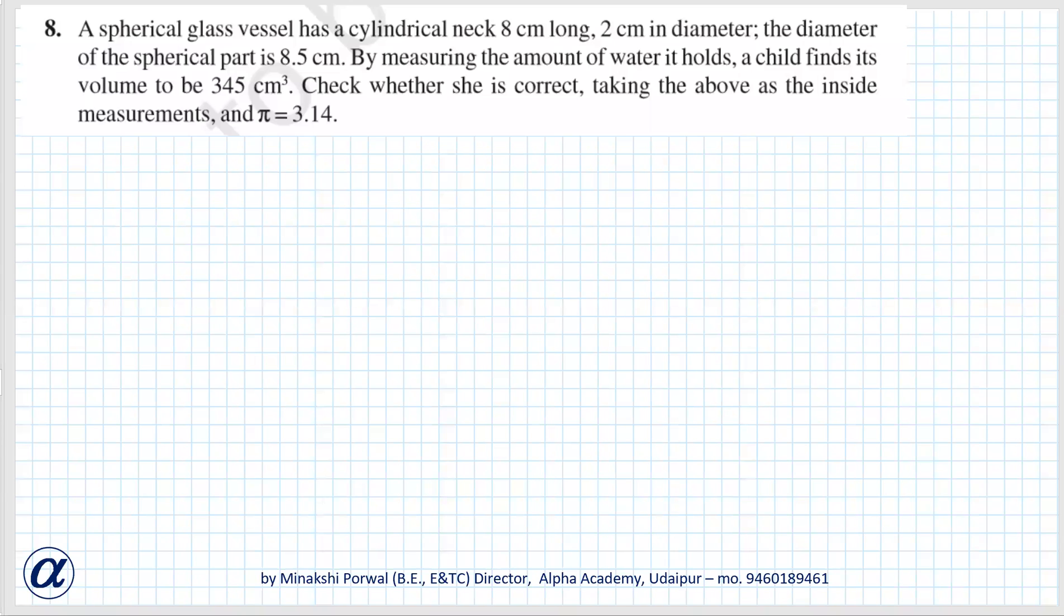Exercise 13.2 Question No. 8. A spherical glass vessel has a cylindrical neck 8 cm long, 2 cm in diameter. The diameter of the spherical part is 8.5 cm. By measuring the amount of water it holds, a child finds its volume to be 345 cm³. Check whether she is correct, taking the above as inside measurements and π as 3.14.